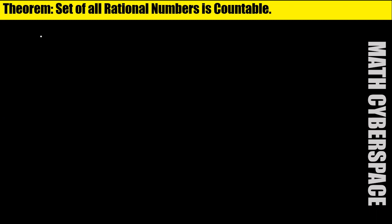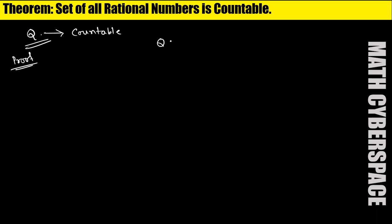So let's see — the set of rational numbers means Q. We have to prove that Q is countable. First of all, what I am doing is breaking Q into some sets. Suppose A0, A1, A2, and so on.